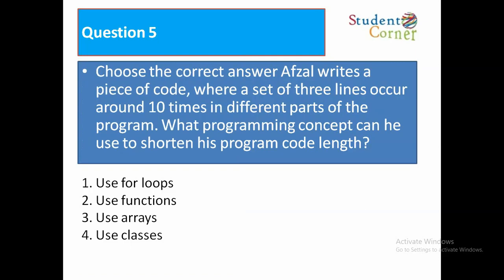Choose the correct answer. Afzal writes a piece of code where a set of three lines occur around 10 times in different parts of the program. What programming concept can he use to shorten his program code length? Option 1: Use for loops. Option 2: Use functions. Option 3: Use arrays. Option 4: Use classes. Use functions.